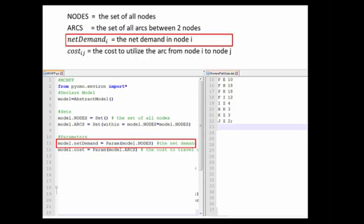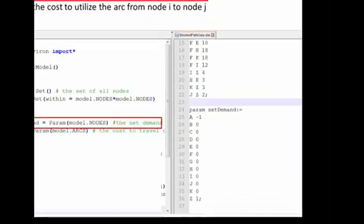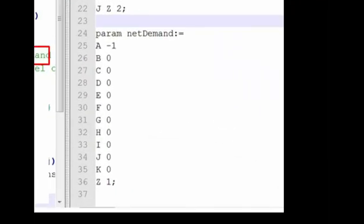And then if we were to scroll down a little bit on our data file, we could see that we could enter the net demand as follows, where we have a net demand for each one of our nodes. And they would be specified something like this, where we'd list all of our nodes, and then the net demand associated with each one of those nodes.